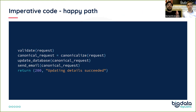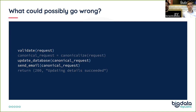How would this look in traditional Python? If I were to build this application from scratch, I would have something that resembles this: validate the request, do some lowercasing, some canonicalization, update the database, send an email, and return something. This is all well and good. But what could possibly go wrong? We have a few calls that could return an error, throw an exception, or do something not intended.